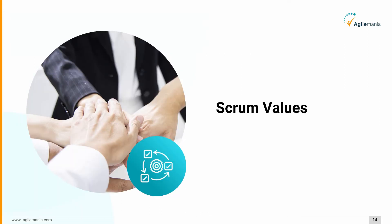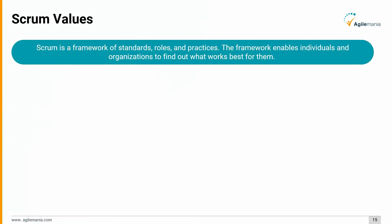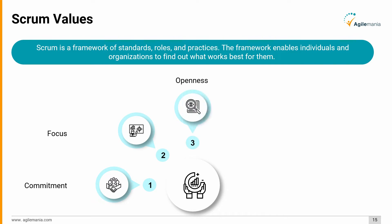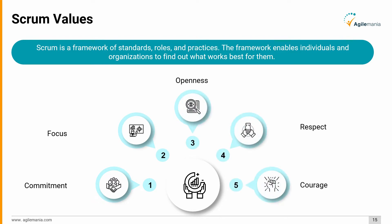Now that we have discussed Scrum theory, it's time to learn about the Scrum values. Scrum is a framework of standards, roles, and practices that enables individuals and organizations to find out what works best for them. The core Scrum values upon which the framework is based are: commitment, focus, openness, respect, and courage.